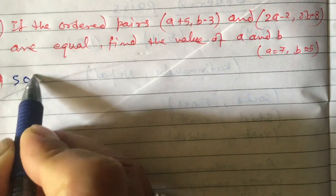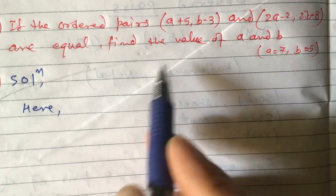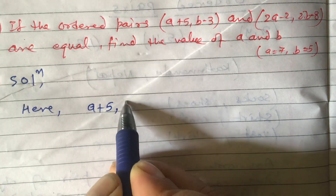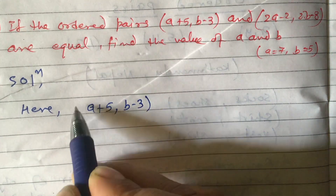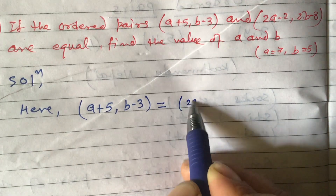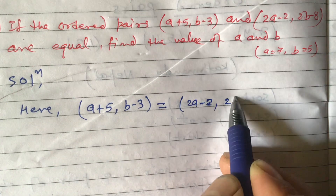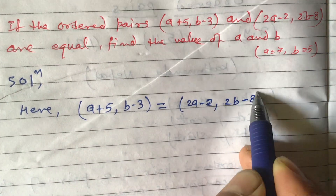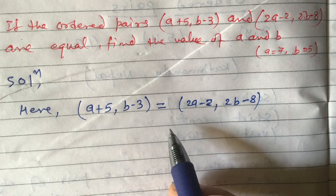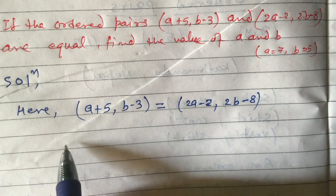Solution: here these two ordered pairs are (a+5, b-3) and (2a-2, 2b-8). Since these two ordered pairs are equal, their corresponding components are also equal, so we can equate them.